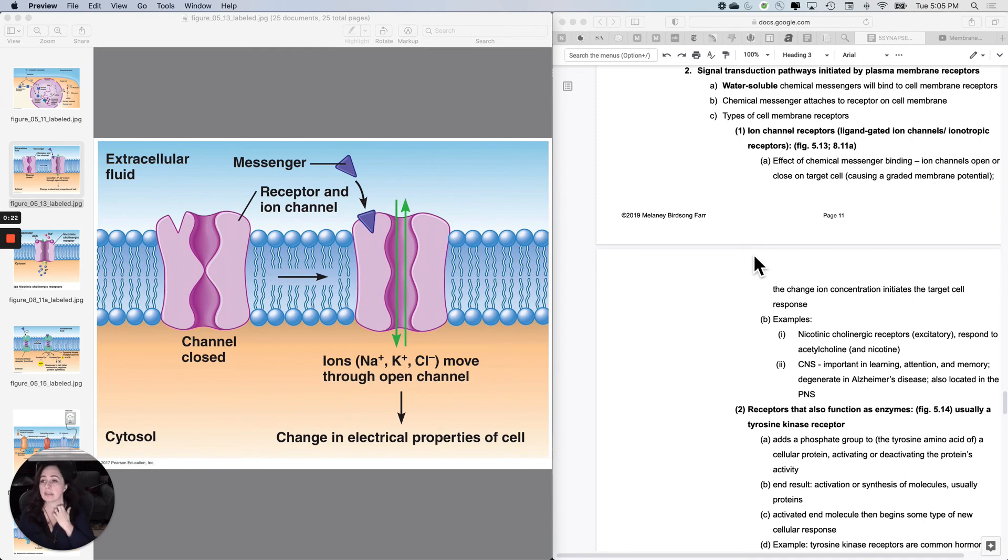So these chemical messengers, whether they're paracrine agents, hormones, neurotransmitters, whatever, where they are going to find their receptor is on the cell membrane, because they're water-soluble and they can't get inside the cell.